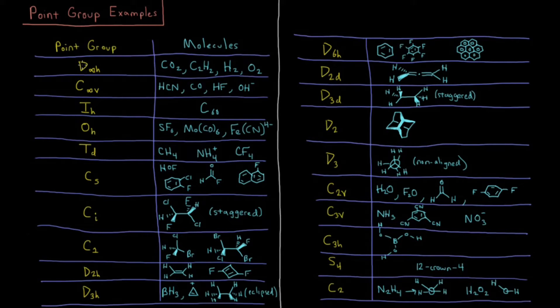So D infinity H, as I said, is a linear group. They're symmetric with respect to the middle of that line as well. So things like CO2, C2H2, and homonuclear diatomics H2, O2. That's really the most symmetric group that we encounter typically in chemistry for molecules.